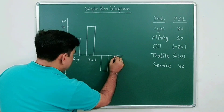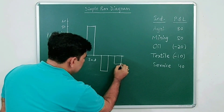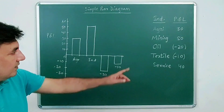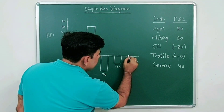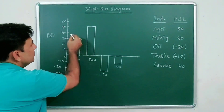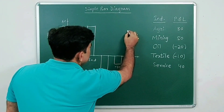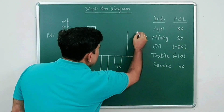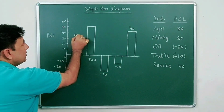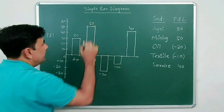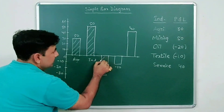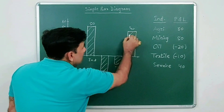Textile has a loss of 10 crores, so plot it at minus 10 below the origin. Service sector has a profit of 40 crores, so extend the line up and plot it at 40. Make sure you have uniform gaps between all the bars. Your completed simple bar diagram will look like this.